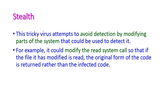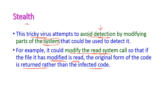The stealth virus is a very tricky virus that attempts to avoid detection by modifying parts of the system, making it very difficult to detect using antivirus software. For example, it could modify the read system call so that if an infected file is read, the original form of code is returned rather than the infected code.